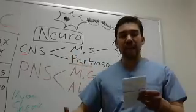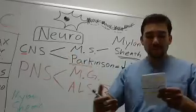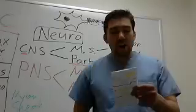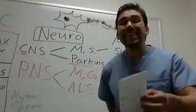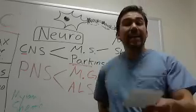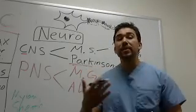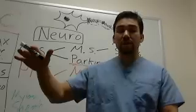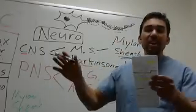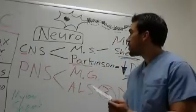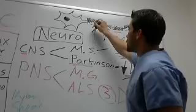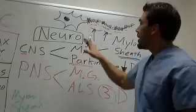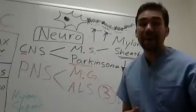Some medications we give for multiple sclerosis are interferons. Your body is going to attack itself at different periods throughout the months — it's not a progressive disorder. We give interferons, which interfere with your body attacking itself. These interferons get in the way and help prevent the body from attacking the myelin sheath.